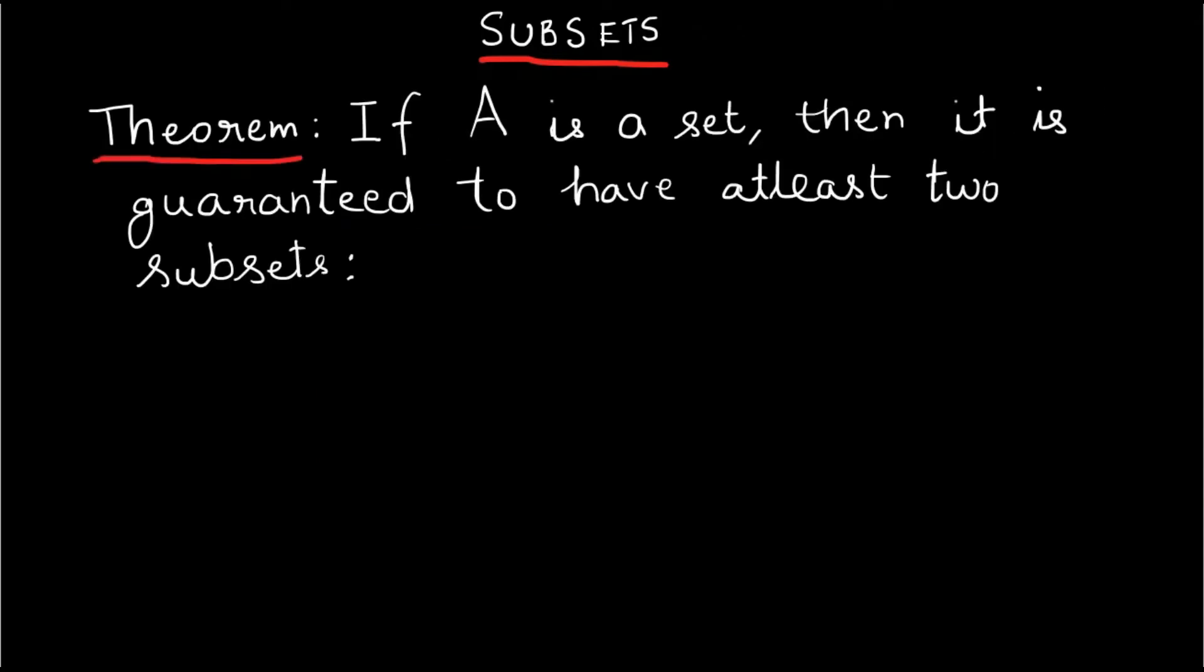When we talk of subsets, there is a theorem. If A is a set, it is guaranteed that it has at least two subsets: empty set. Empty set is subset of all sets and the set itself.